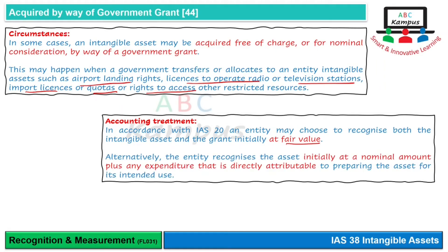Alternatively, if the entity does not record at fair value, it may record at a nominal amount plus any directly attributable expenditure incurred. The priority is generally to record at fair value, but where fair value cannot be reliably measured, recording at a nominal amount at least ensures the asset appears in the records, even if it does not represent the true fair value. These were the key recognition and measurement issues.